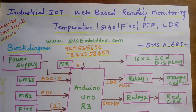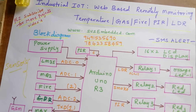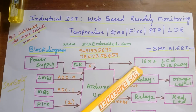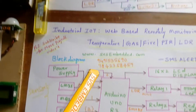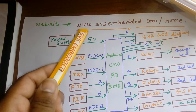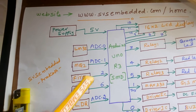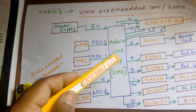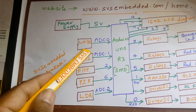We are sending the data to the server and at the same time we are getting SMS alerts. This is the block diagram and this is the circuit diagram. On the website www.svsembedded.com/home, using Arduino UNO R3, ADC0 is connected with the LM35 temperature sensor.